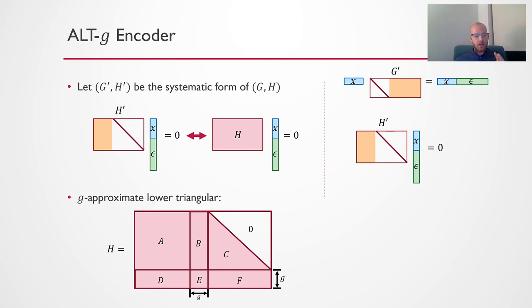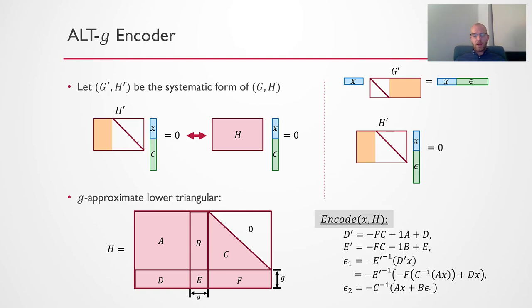But we don't actually want to explicitly write out H prime because even though H is sparse H prime might not be. But that's okay because we can leverage the fact that the null space of H prime and H are the same. We have an encoding algorithm and the important takeaway is that the running time of this encoding algorithm is M plus G squared. Importantly, this algorithm is only efficient, only linear time when G is smaller or square root M.